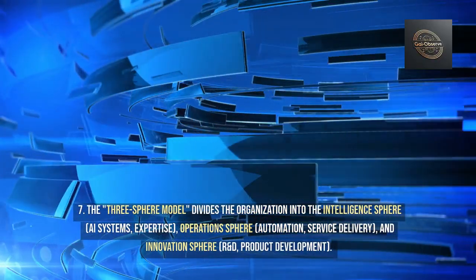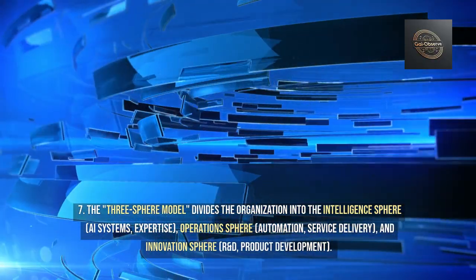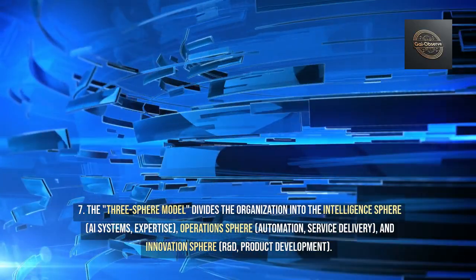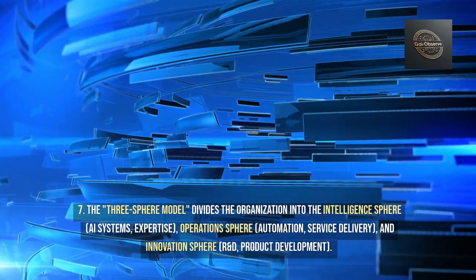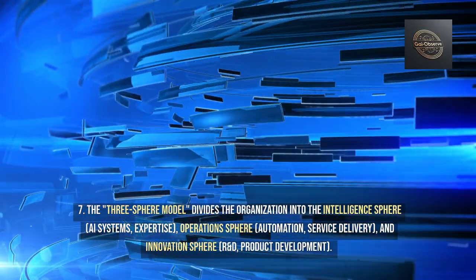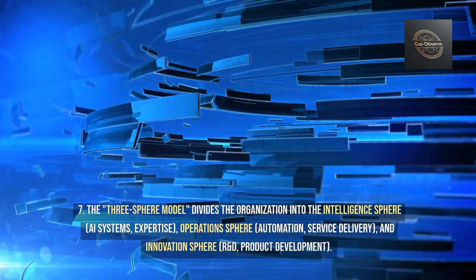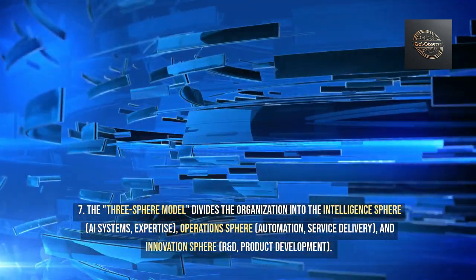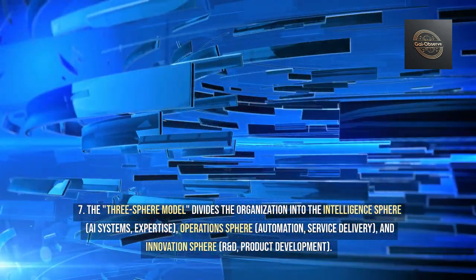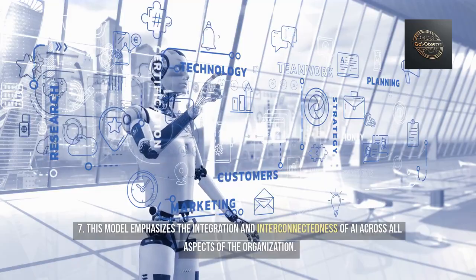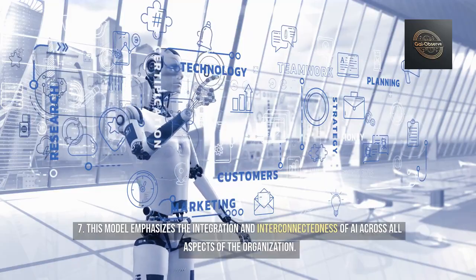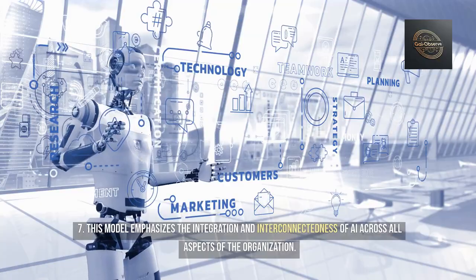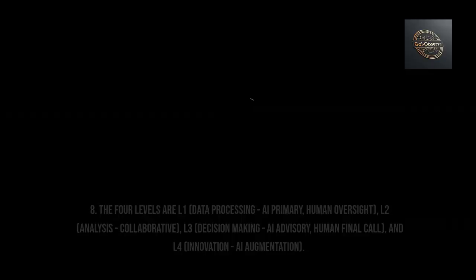Answer 7: The three-sphere model divides the organization into the intelligence sphere (AI systems, expertise), the operations sphere (automation, service delivery), and the innovation sphere (R&D, product development). This model emphasizes the integration and interconnectedness of AI across all aspects of the organization.